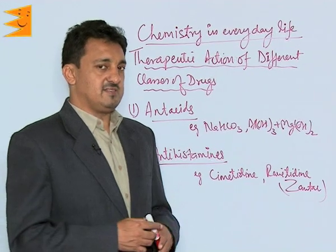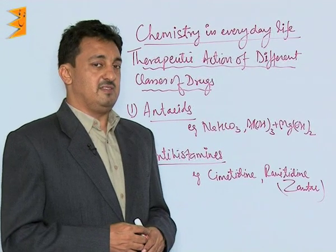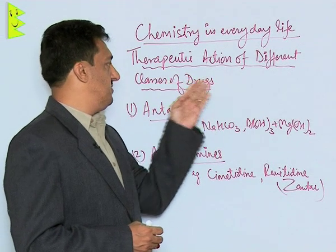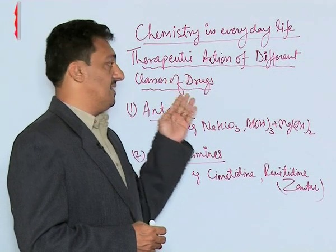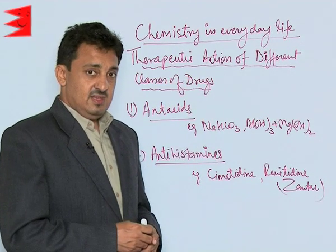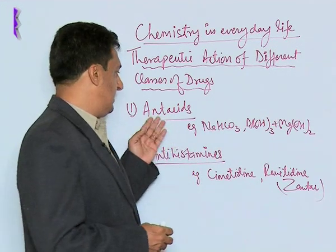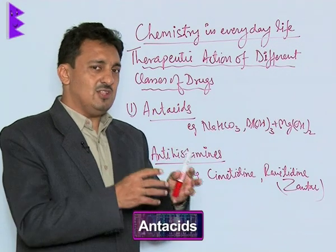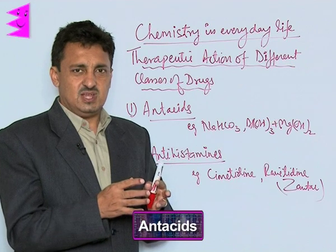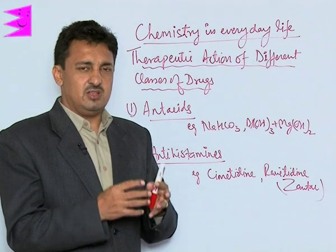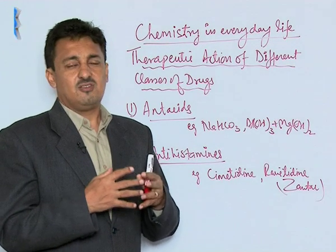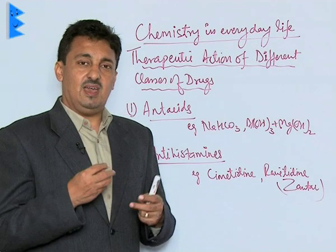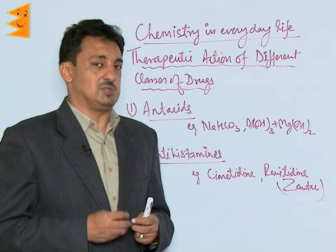Now let us classify the drugs on the basis of their therapeutic action. The first category is antacids. Antacids are those drugs or chemical substances which are taken to get prevention or relief from acidity or from the HCl which is secreted in excess in our stomach.